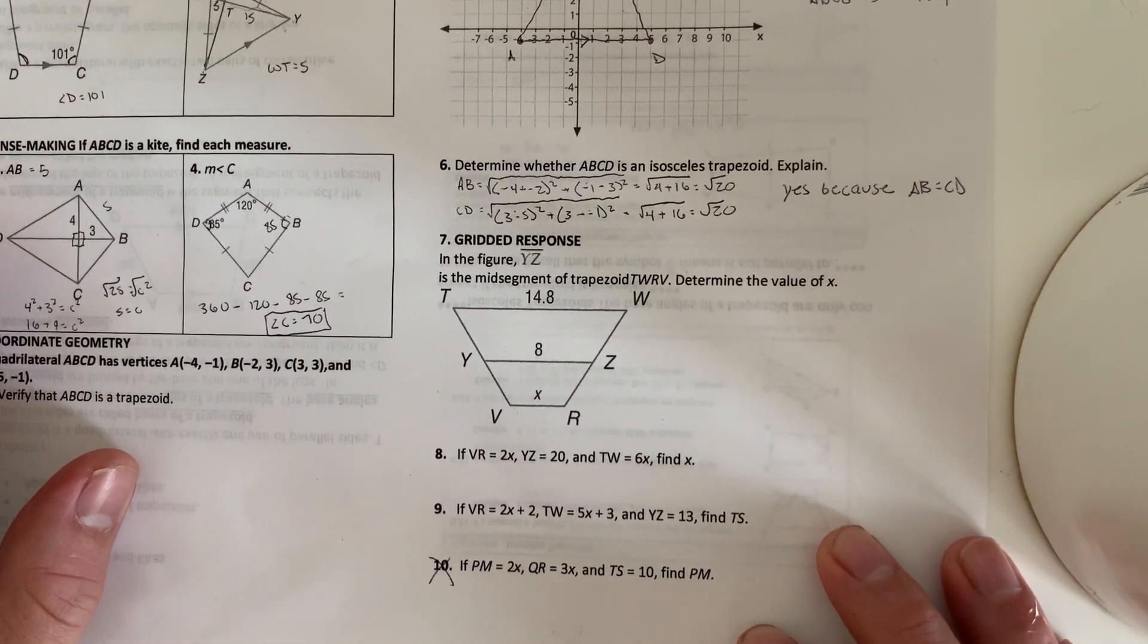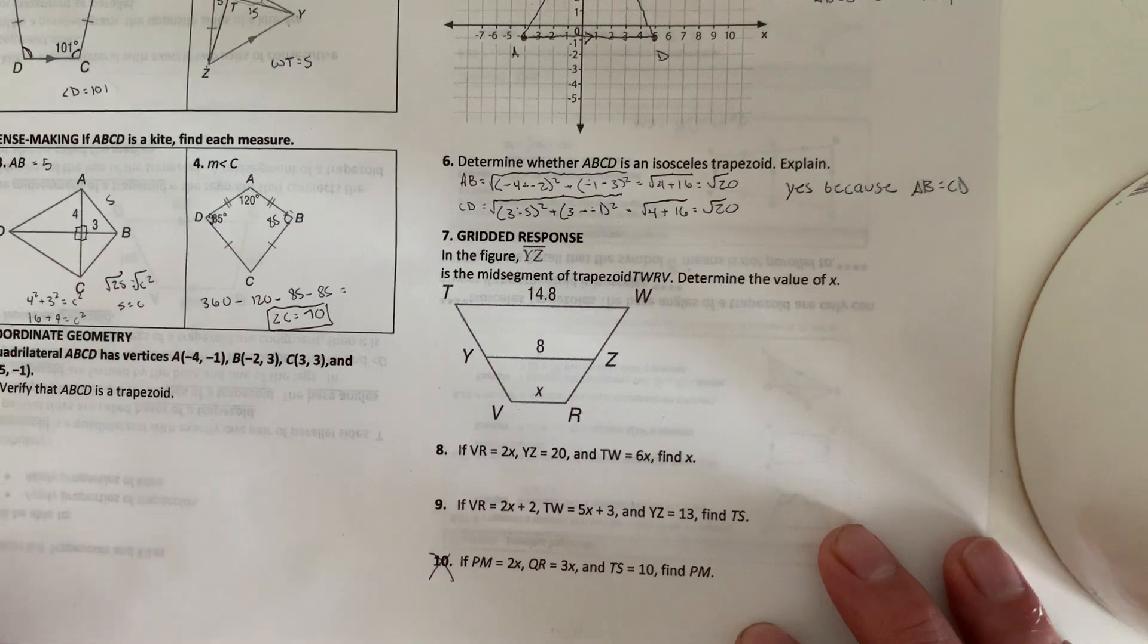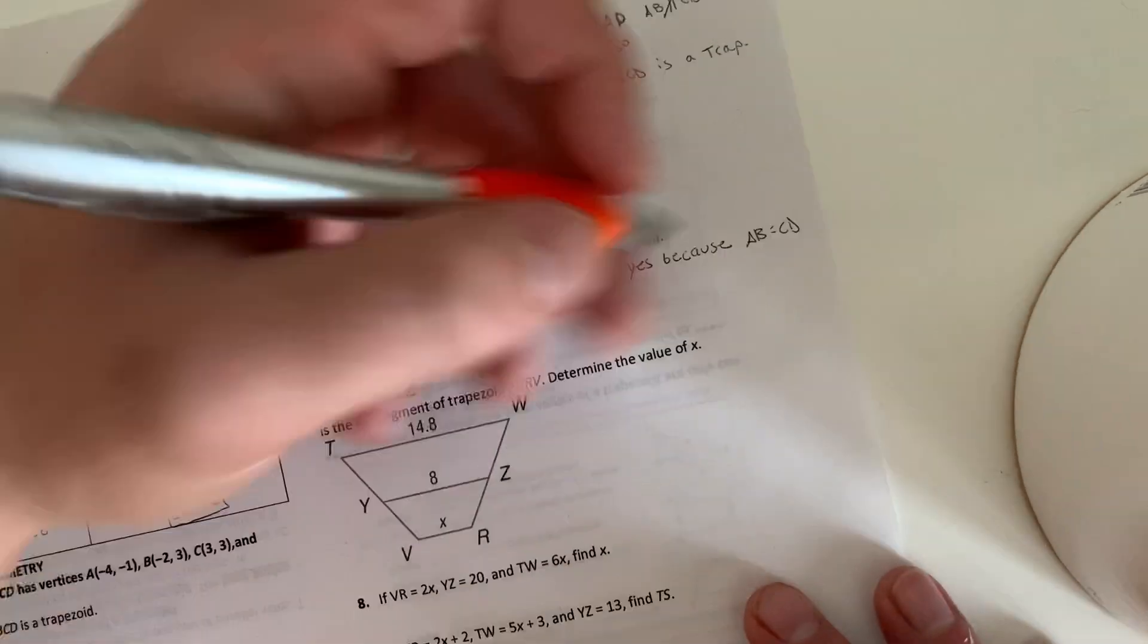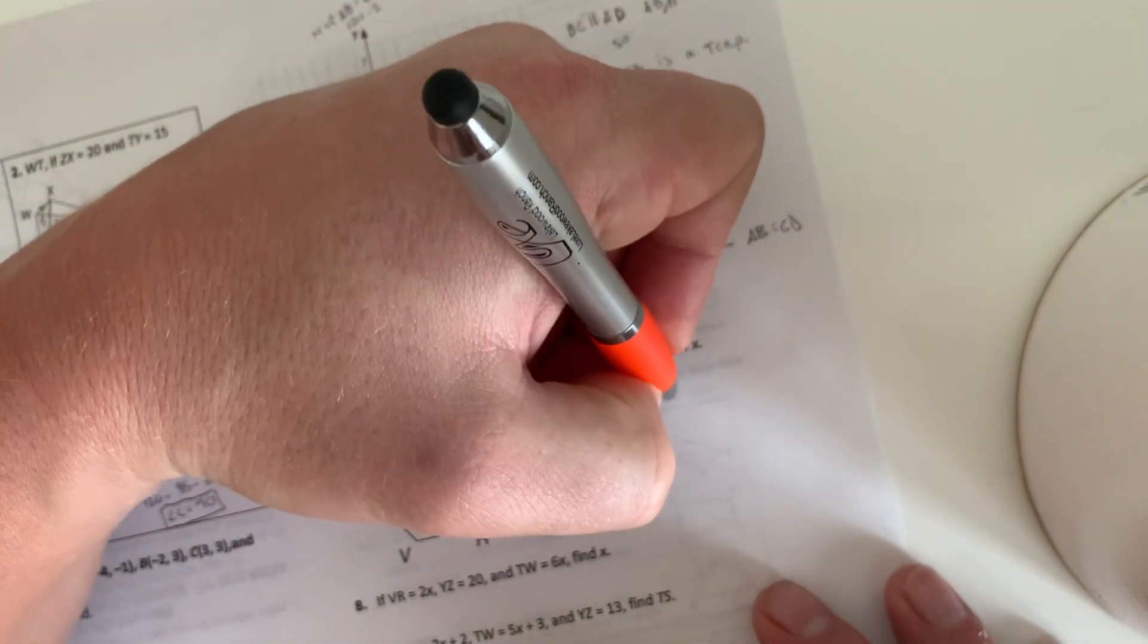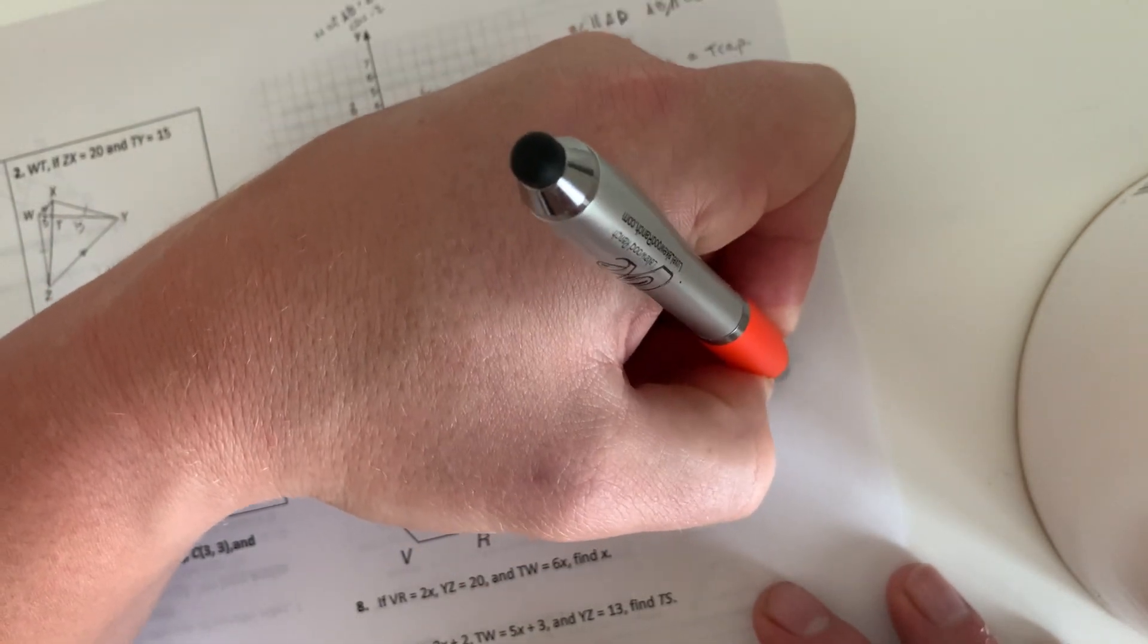So in the figure, YZ is the mid-segment of trapezoid TWRV and determine the value of X. So all of these are using the midpoint or mid-segment. And that is that mid-segment formula. Again, I'll write it over here. Mid-segment equals 1 half base 1 plus base 2. It doesn't matter which one you pick to be base 1 or base 2 because we're just adding them together.